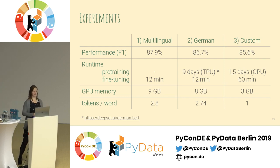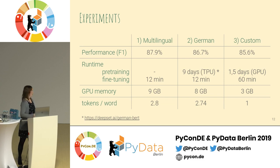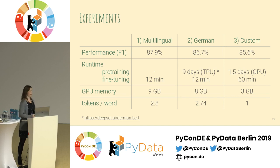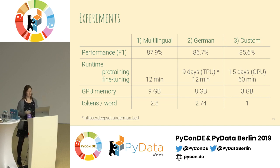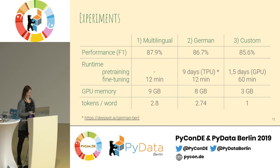Since I used FastText embeddings instead of WordPiece embeddings, each word was directly taken as a token without further splitting. I could really reduce GPU memory compared to the original-size BERT model. DeepSet also did experiments on multiple downstream tasks and concluded that in four out of five cases, the German model was actually better than the multilingual model.